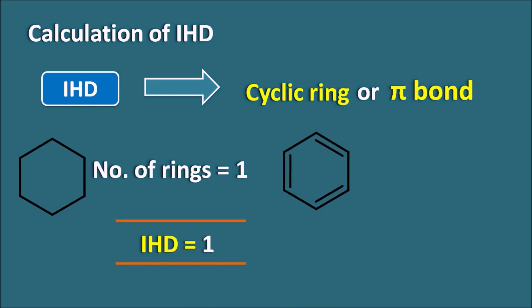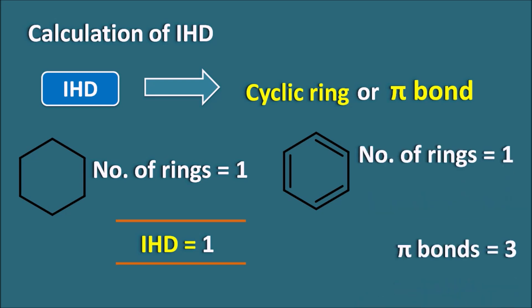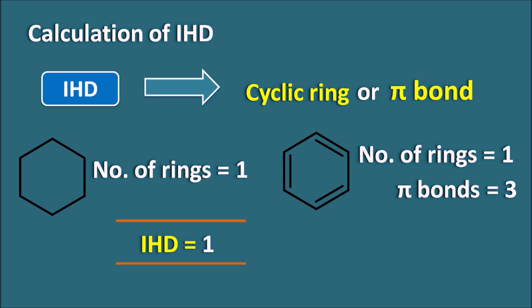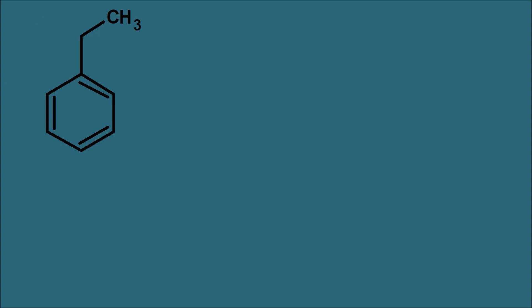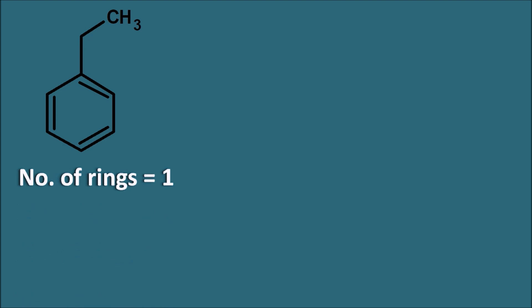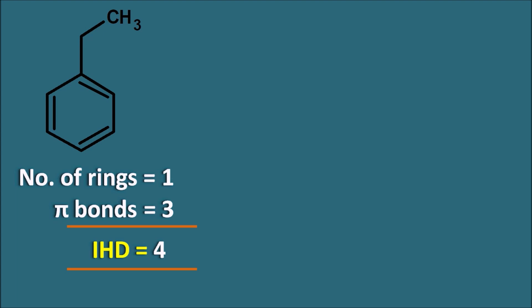For benzene, we can see one ring and three pi bonds, so the total degree of unsaturation is 1 plus 3, which equals 4. Therefore, the IHD value for benzene is 4. Similarly, for ethylbenzene, the number of rings is one and the number of pi bonds is three — there is no extended conjugation. So the IHD value for ethylbenzene is also 4.